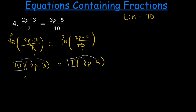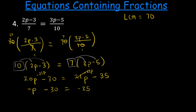Expanding gives us 20p minus 30 equals 21p minus 35. We subtract 21p from both sides: 20 minus 21 gives negative 1p, so negative p minus 30 equals negative 35. We add 30 to both sides to get negative p equals negative 5. Dividing both sides by negative 1, therefore p is equal to positive 5.